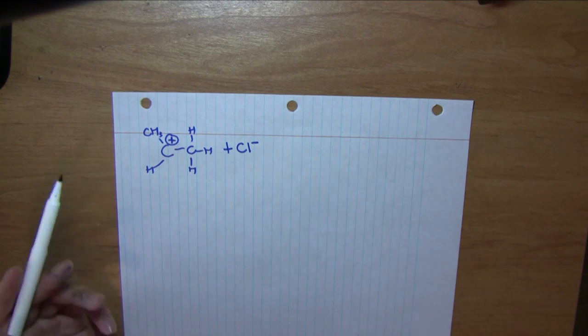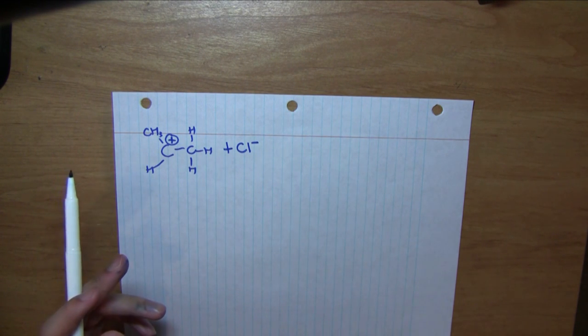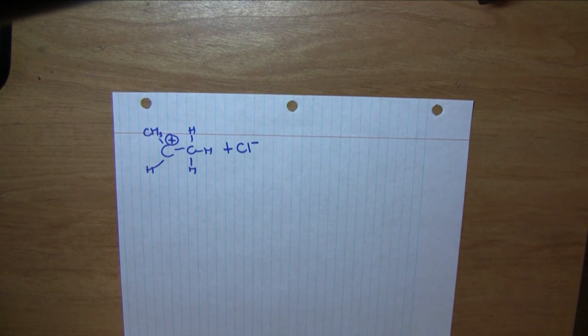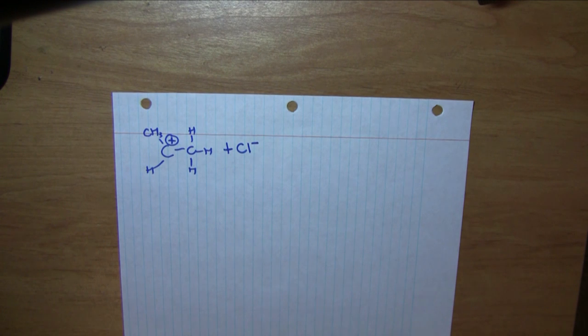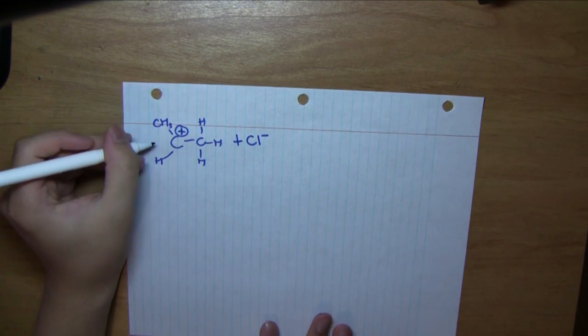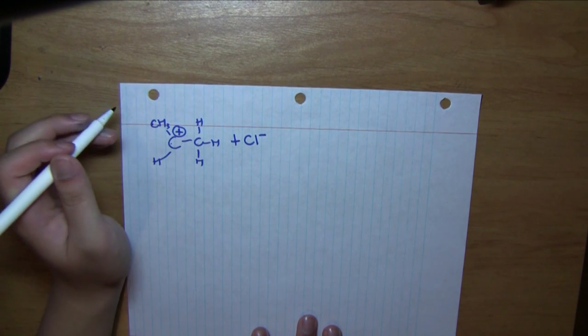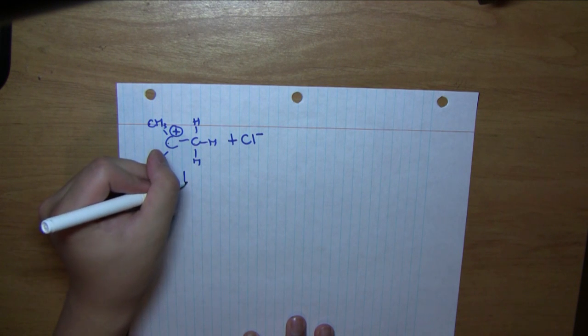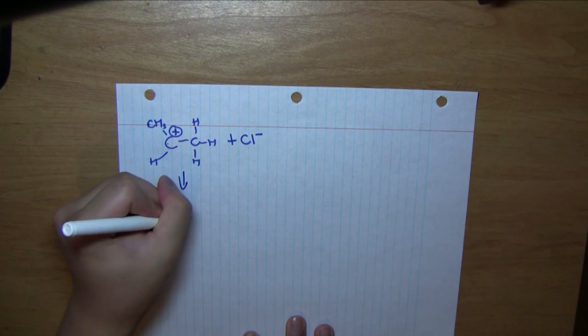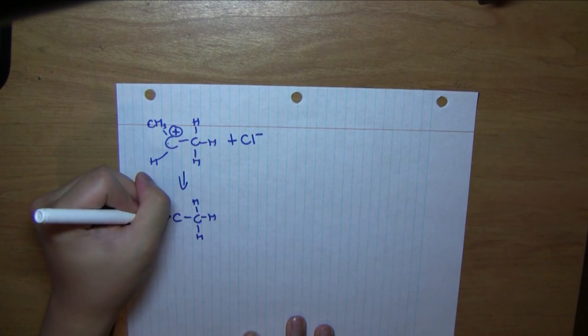This is an important step to remember, because in many reactions we can form two enantiomers—two molecules which are non-superimposable mirror images of each other, making them different molecules. However, in this case, because we have two identical groups on this carbon, we don't form any enantiomers. So all we need to draw for the product is this.